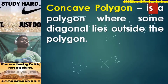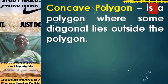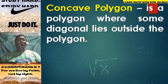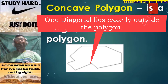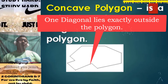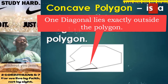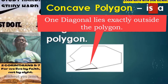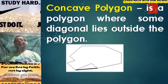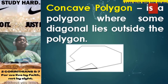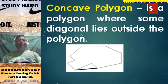We also have a concave polygon. A concave polygon is a polygon where some diagonal lies outside the polygon. For instance, we have here an irregular polygon. If we join the vertex from one point to another, we get a diagonal. This diagonal lies outside the polygon. So therefore, this is not a convex polygon — it is simply a concave polygon. Take note of that.